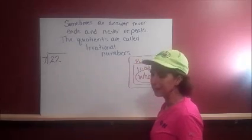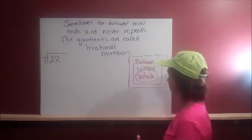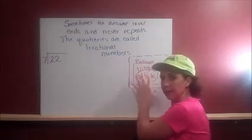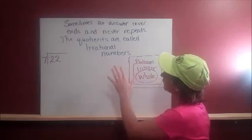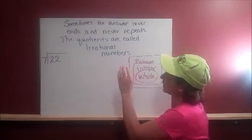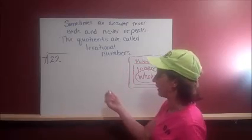This is an example of an irrational number. An irrational number doesn't even fit in our nice diagram. An irrational number is a number that never repeats and never ends.